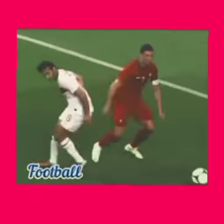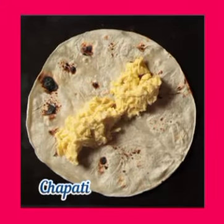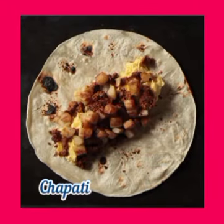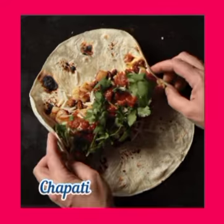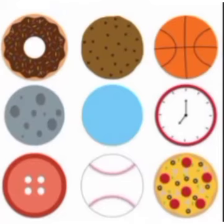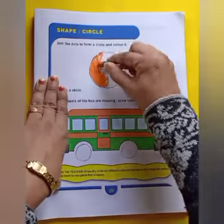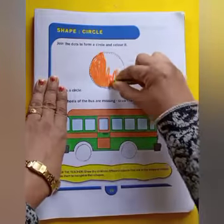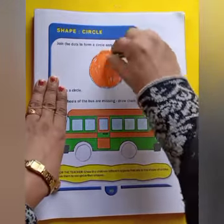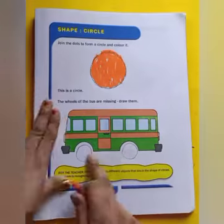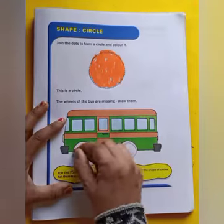The clock is in the shape of a circle. Football is in the shape of a circle. Chapati is in the shape of a circle. Children, these are some objects which are circular in shape. Children, now we will solve your worksheets from the Fun with Maths book.